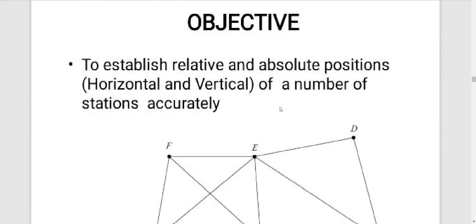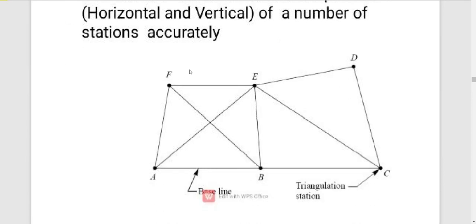The objective is a survey method. The first objective is absolute positions — stations in the absolute positions accurately marked. We have to write the base line of stations and the triangulation stations.